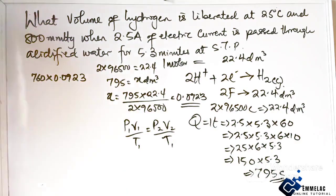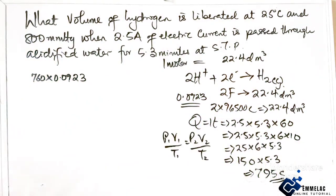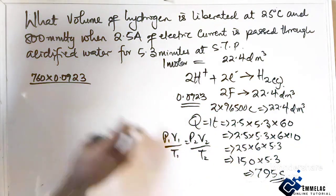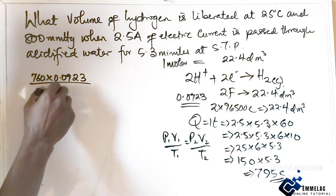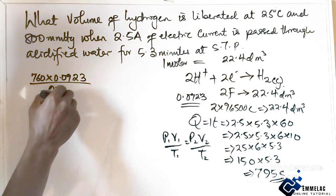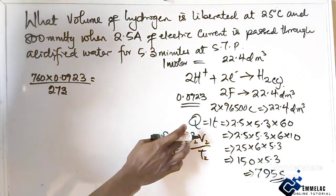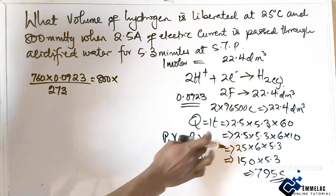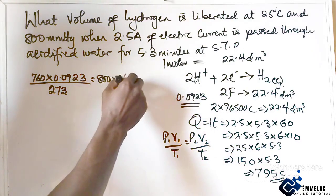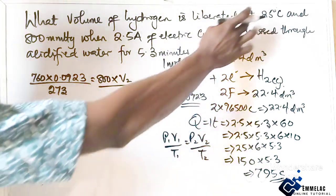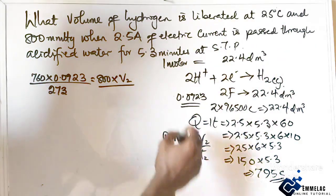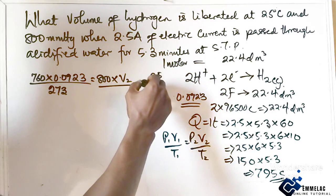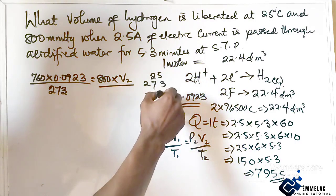This equals our pressure here which is 800 times our volume, which is what we're looking for, over the temperature which is 25 plus 273, which is 298.